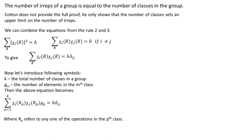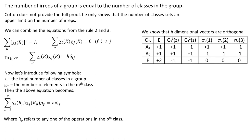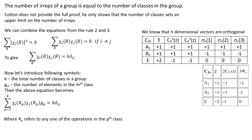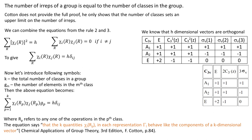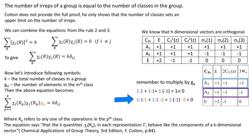Where rp refers to any one of the operations in the pth class. We know that h dimensional vectors are orthogonal. If we group elements into classes the vectors become k dimensional because we took k as a total number of classes in a group. What our formula is essentially doing is grouping elements of the h dimensional vectors according to classes and we show with the rule 4 that the characters of all matrices belonging to operations in the same class are identical. Therefore cotton continues the k quantities chi l rp in each representation tau l behaves like the components of a k dimensional vector. These vectors are mutually orthogonal but please remember to take into account the number of elements in the class gp.